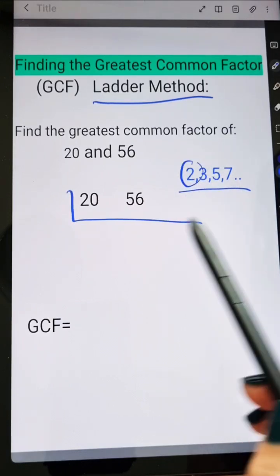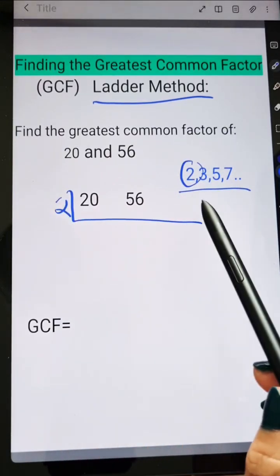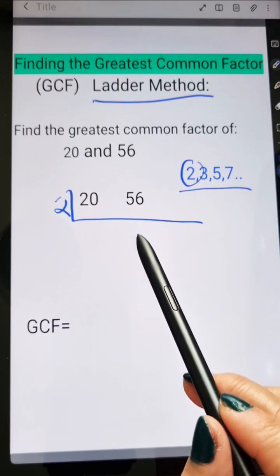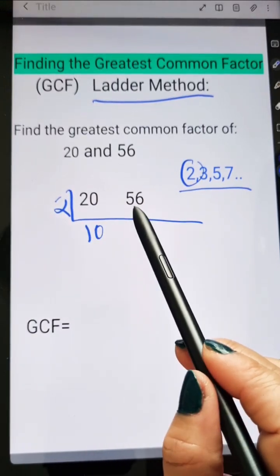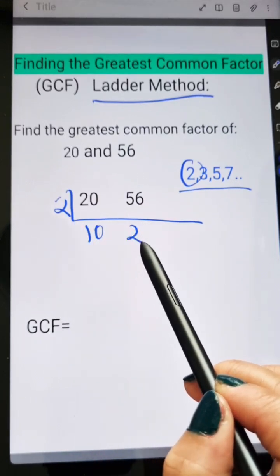Now I'm going to use 2 as divisor because 20 and 56 are divisible by 2. So 20 divided by 2, that is equal to 10, and 56 divided by 2, that is equal to 28.